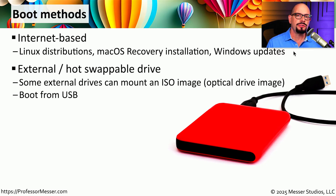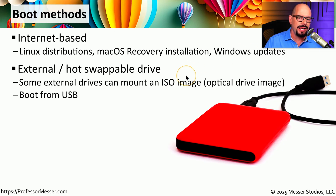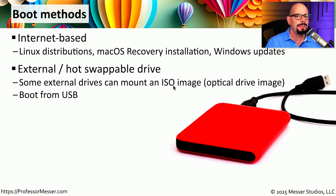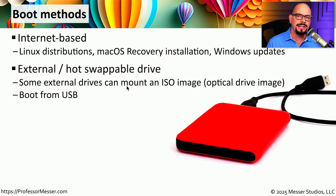Older operating systems used to distribute their code on optical disks, things like CD-ROMs and DVD-ROMs. There's a standard format for taking an optical disk and creating a disk image file known as an ISO image. This ISO image contains everything that would normally be found on that optical disk. So we can configure and set up an entire OS installation on one single ISO image and simply boot from that image. This is a very common format to boot from if you're using virtualization software, and there are some external drives that will mount that ISO image and make it appear as if it is a physical disk.